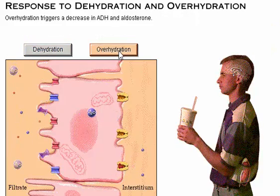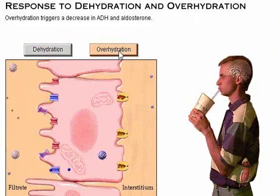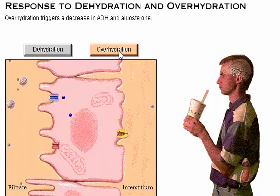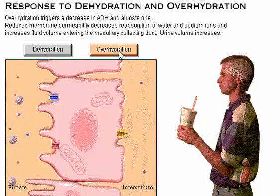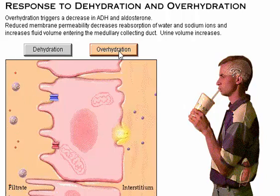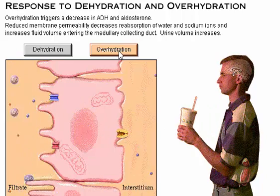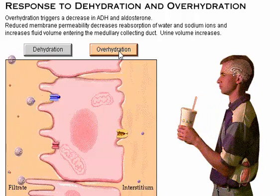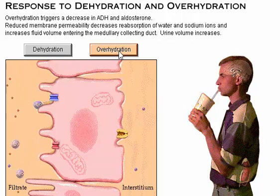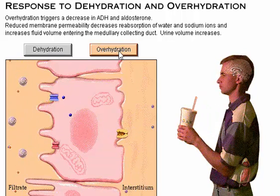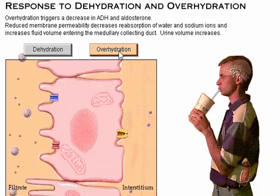Overhydration, which could be caused by drinking several cans of soda or other beverages, triggers a decrease in ADH and aldosterone levels. As a result, membrane permeability for water and sodium ions decreases, reabsorption slows dramatically, and the volume of filtrate entering the medullary collecting duct increases above the normal level, causing urine volume to increase. High urine volumes also occur when substances containing diuretic chemicals are consumed.